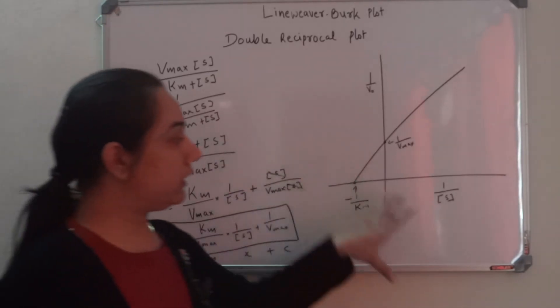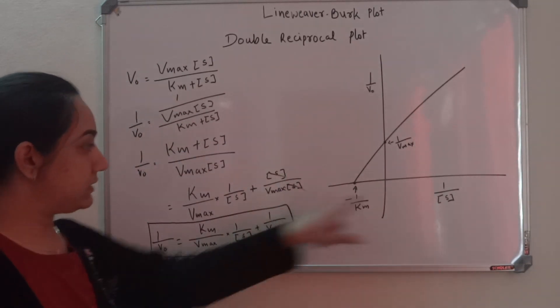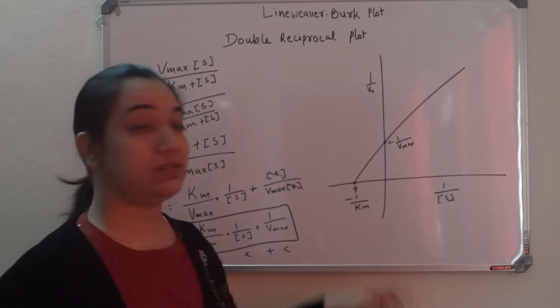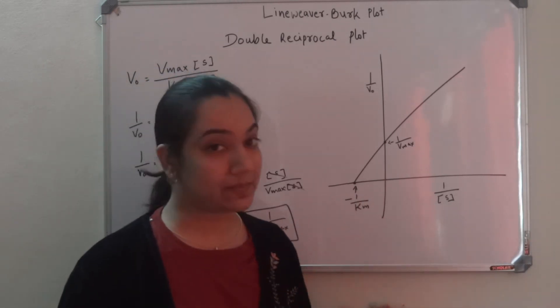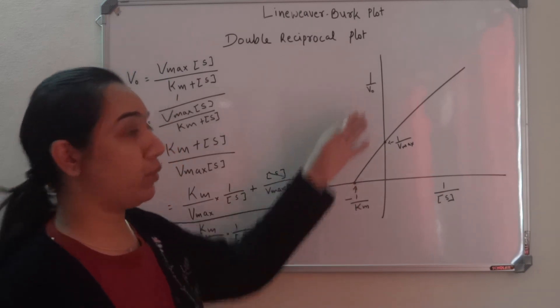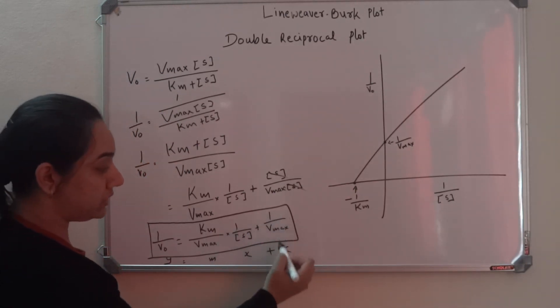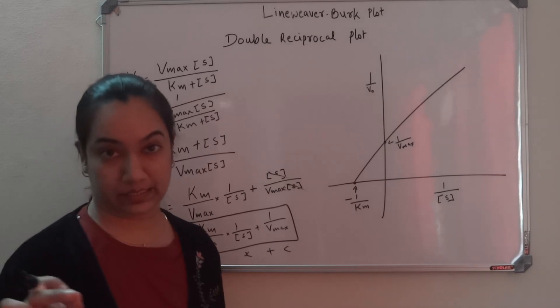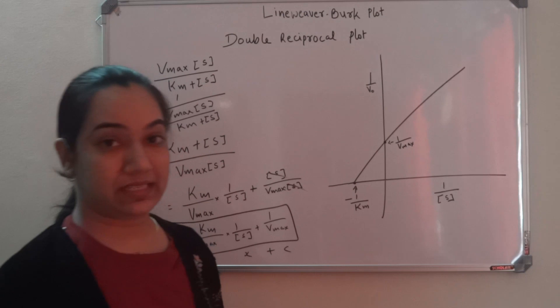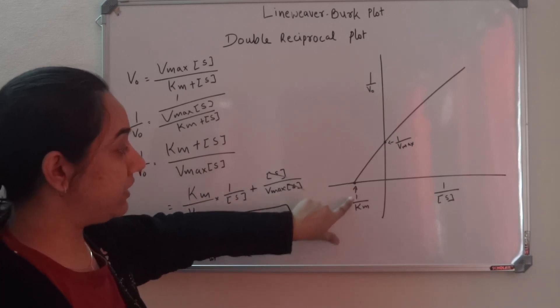When we plot this as a straight line, y is 1 by V0, x is 1 by substrate concentration. That makes sense because in the MM equation, we had velocity on the y-axis and substrate concentration on the x-axis. Since it's a reciprocal plot, we're getting 1 by V0 and 1 by substrate concentration. C is the y-intercept. Wherever this line is intercepting, this point is the y-intercept. According to the equation, we have 1 by Vmax, and the x-intercept is minus 1 by Km.